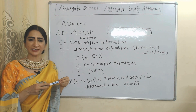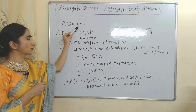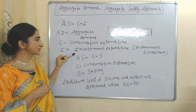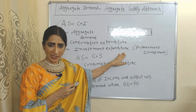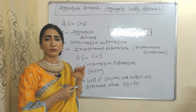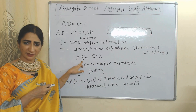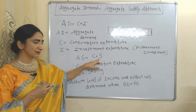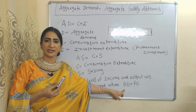First, we will see the Aggregate Demand and Aggregate Supply approach. Here we are talking about a two-sector economy, so aggregate demand equals C plus I, where AD is aggregate demand, C represents consumption expenditure, and I represents investment expenditure. Investment is assumed to be autonomous — autonomous investment remains constant regardless of whether income is increasing or decreasing. Aggregate supply equals C plus S, where AS is aggregate supply, C is consumption expenditure, and S is saving. Equilibrium level of income and output is determined where aggregate demand is equal to aggregate supply.